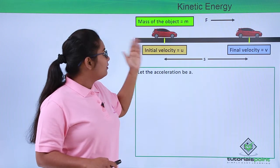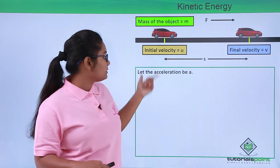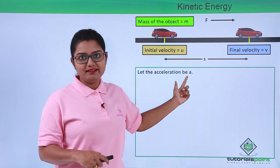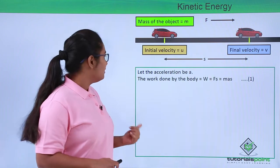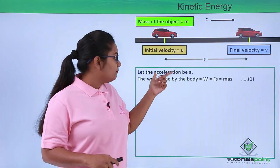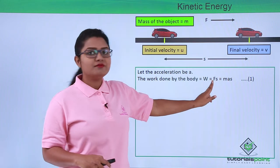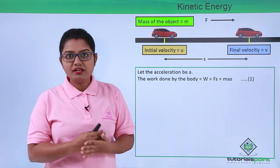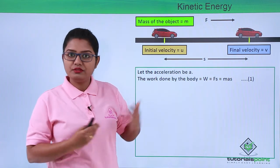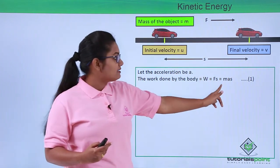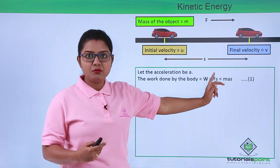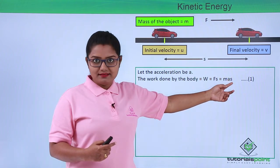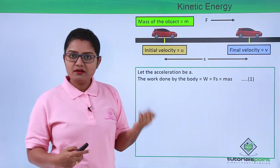Since the velocity has changed from u to v, there must be some acceleration, which we take as a. The work done W will be equal to force times displacement, which we have already learned. From Newton's second law of motion, force equals mass times acceleration, that is F = ma. So our work done turns out to be W = mas. Let us take this as equation number 1.